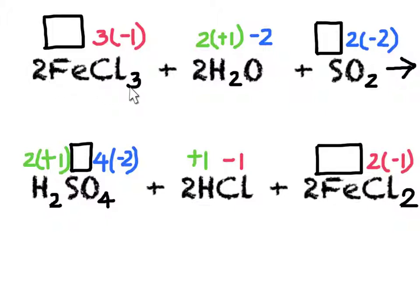Let's start with iron(III) chloride. Because this is a neutral substance, the sum of the oxidation numbers needs to add up to zero. So in order to balance the negative 3 oxidation number of the chlorides, the iron needs to have an oxidation number of plus 3. For sulfur dioxide, the same thing applies — because it's a neutral substance, the sum of the oxidation numbers needs to be zero. Because we've got a negative 4 overall contributed by the oxygen, the oxidation number of the sulfur must be positive 4. For sulfuric acid, we've got hydrogen contributing an oxidation number of plus 2 and minus 8 from the oxygens, which means the sulfur in sulfuric acid must have an oxidation number of plus 6.